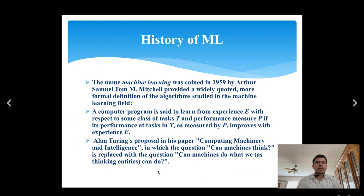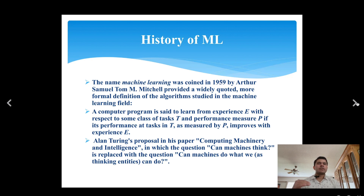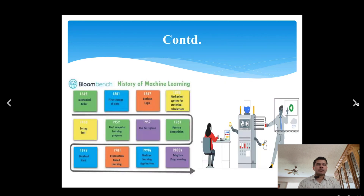What is machine learning? Machine learning is a dynamic field of artificial intelligence that empowers computers to learn from data and make informed decisions. Machine learning is a subset of AI that allows systems to improve performance by learning from past experience without explicit programming. Unlike traditional programming where explicit instructions are provided to accomplish tasks, machine learning models learn from patterns and examples in data to make predictions and decisions.